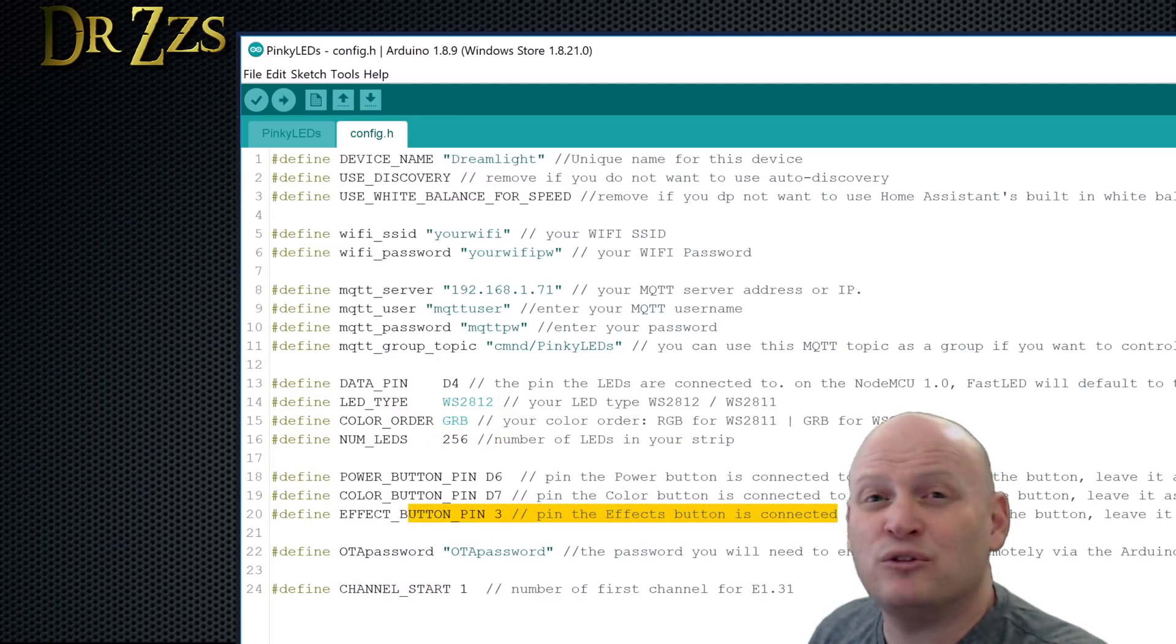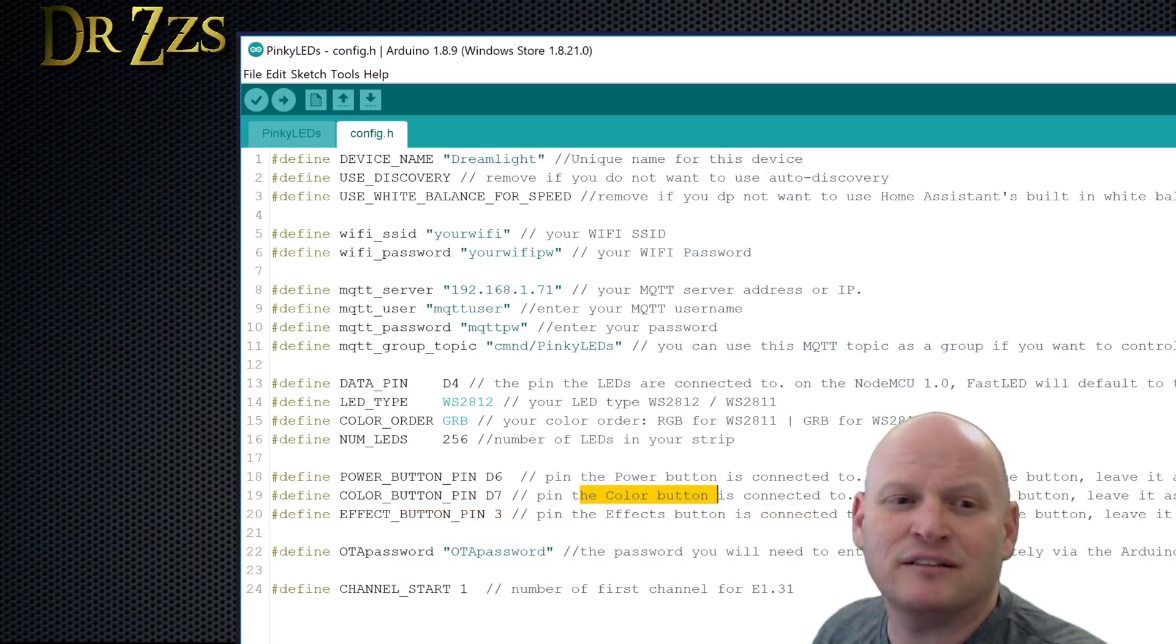This pin that you're going to use to connect to the button to change the effect is labeled RX on a D1 Mini. This is the button that changes the color. So the color button is D7, and D6 is the button that powers it on and off. And I think that's about it.